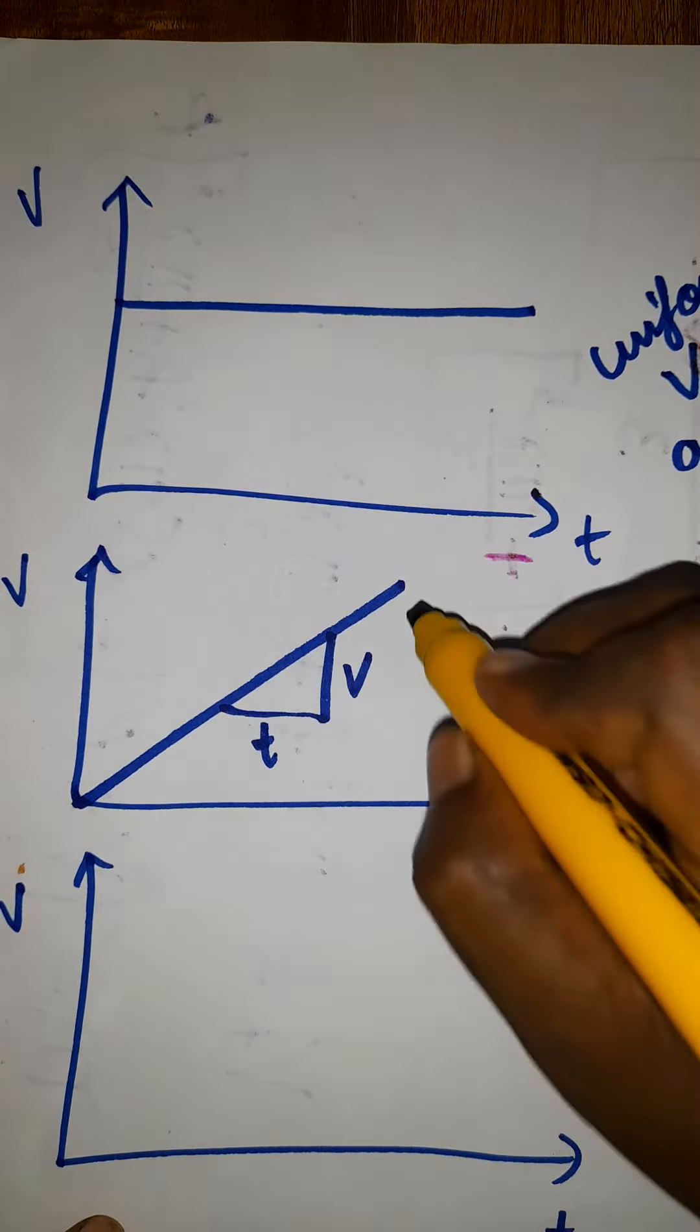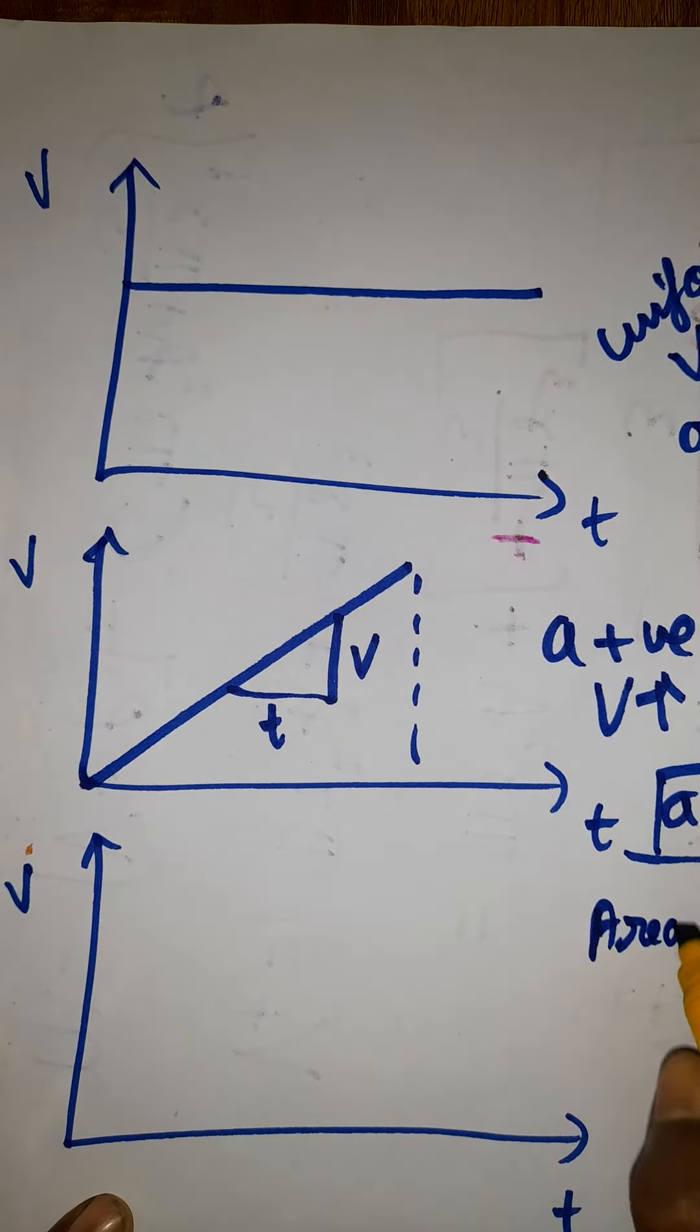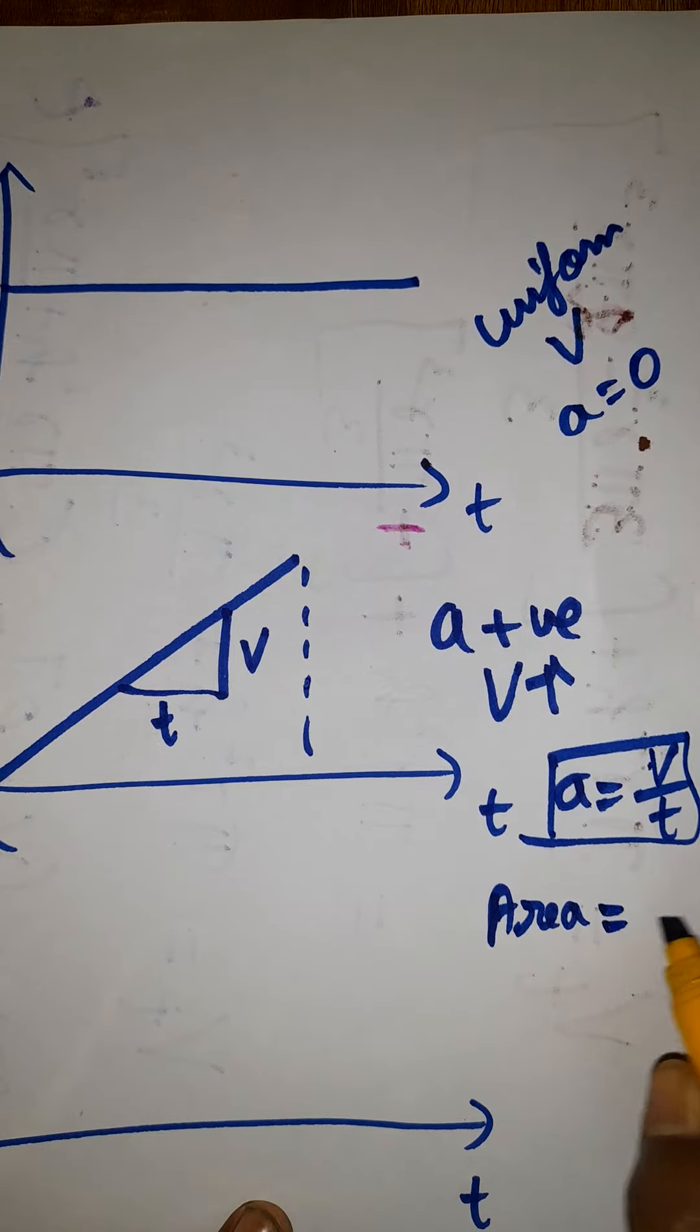If you take the area of this graph—if you make this as a triangle—the area of this graph is going to be displacement. The area of the graph will be displacement because velocity into time.